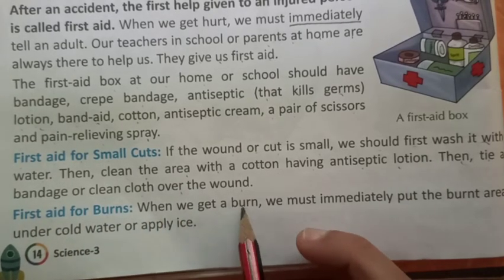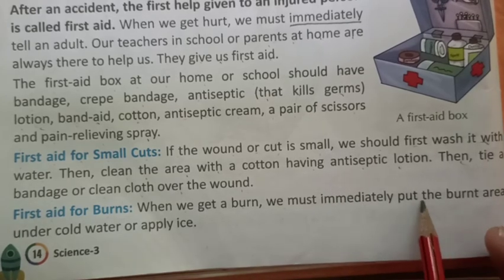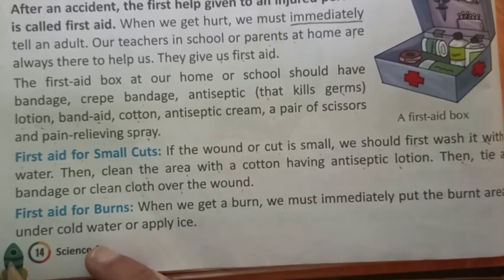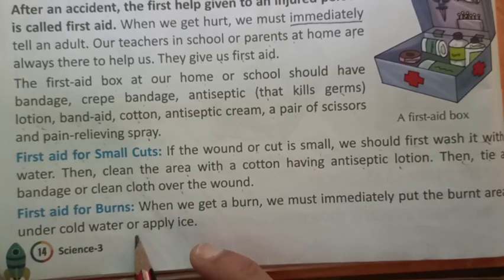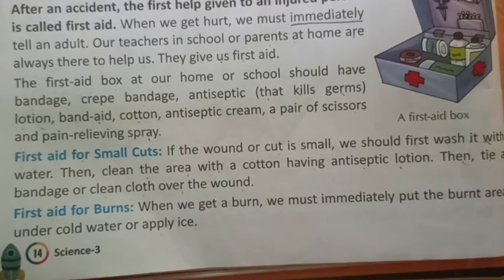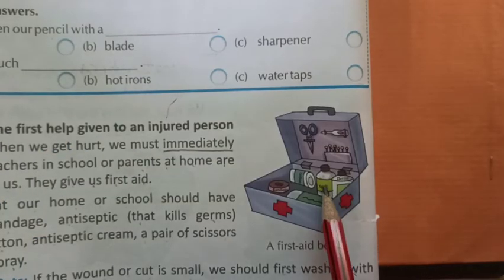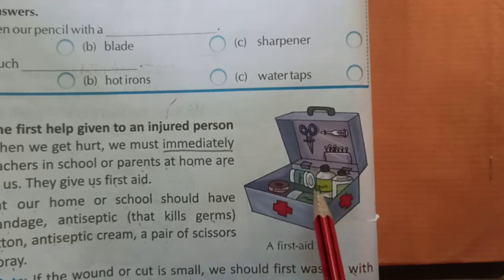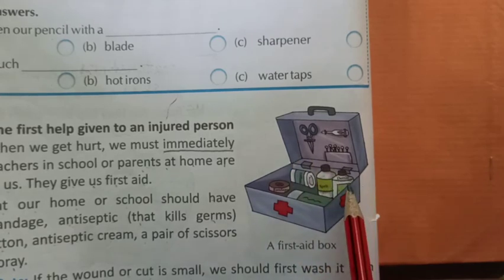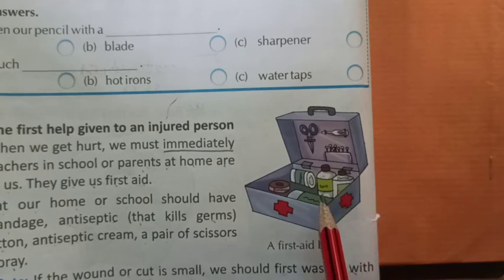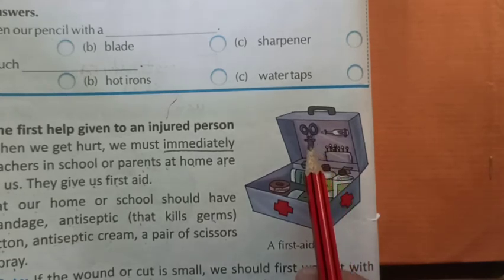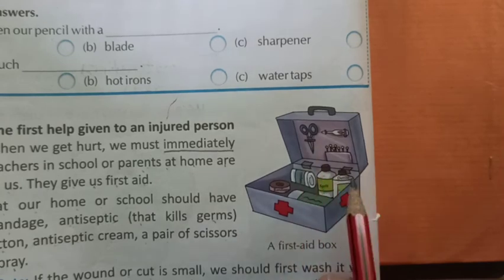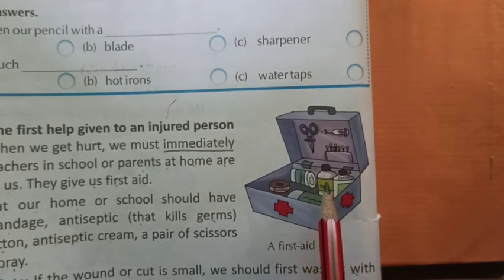First aid for burns: when we get a burn, we must immediately put the burnt area under cold water or apply ice. Here you can see a first aid box — it contains a bandage, crepe bandage, antiseptic lotion, bandaid, cotton, antiseptic cream, spirit, and a pair of scissors.